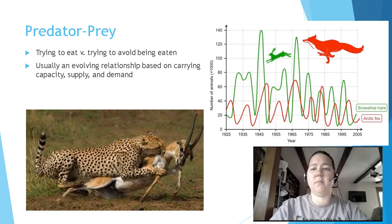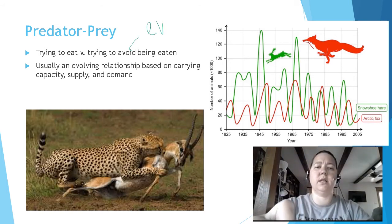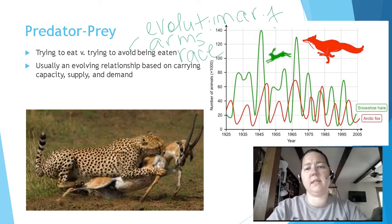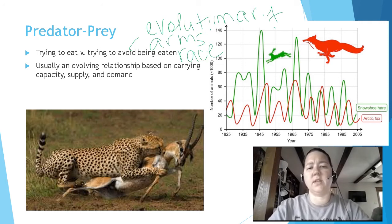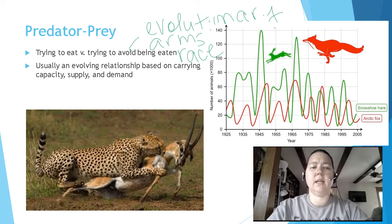Then we've got predator and prey. In predator-prey, somebody's trying to eat and somebody's trying to avoid being eaten. This is sometimes referred to as an evolutionary arms race because one evolves to get faster — the rabbit evolves to run faster, so the fox has to evolve to run faster. It's an evolving relationship, but it also changes season to season based on carrying capacity and supply and demand.